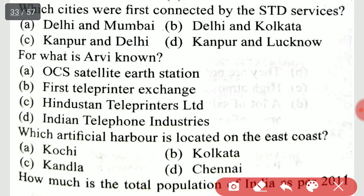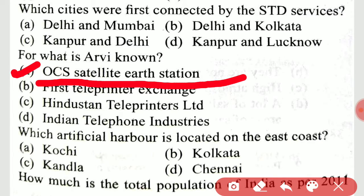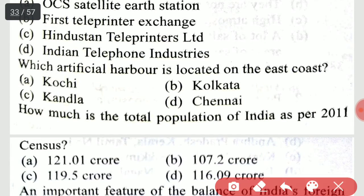What is Arvi known for? It is known for the OCS Satellite Earth Station. Which artificial harbour is located on the east coast?